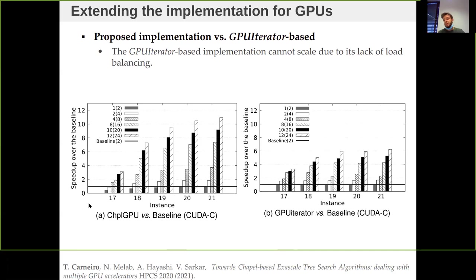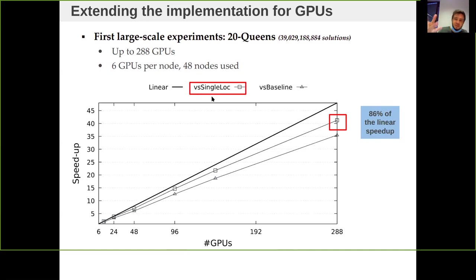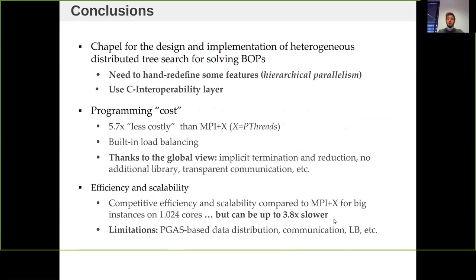The best of both worlds would be if the GPU iterator had load balancing, as that would be a huge step towards productivity. In large-scale experiments using 288 GPUs, we reach 86% of linear speedup compared to the single-locale version of the application, and 74% of linear speedup compared to an optimized CPU baseline.